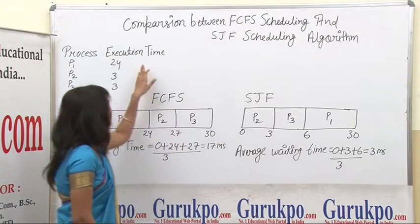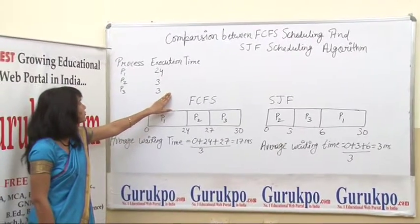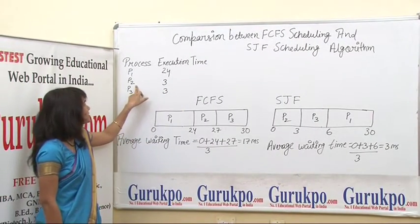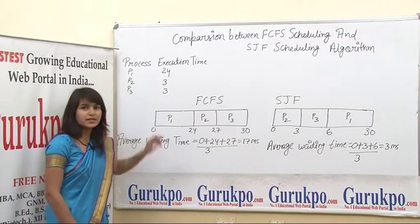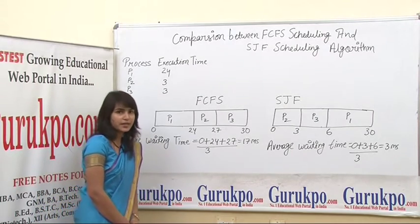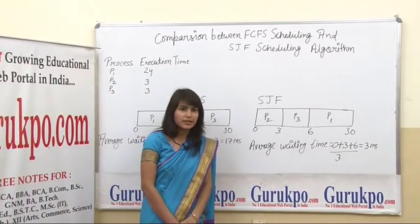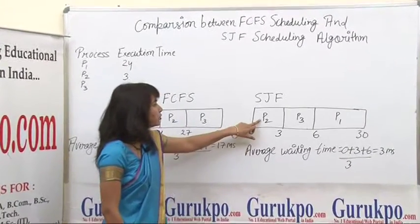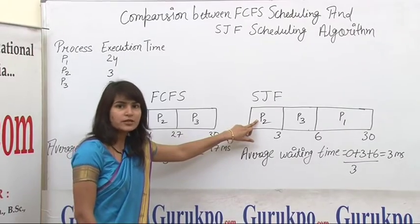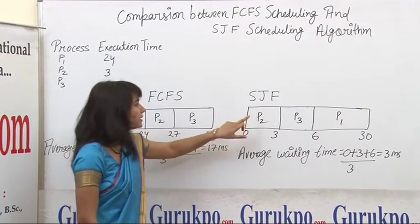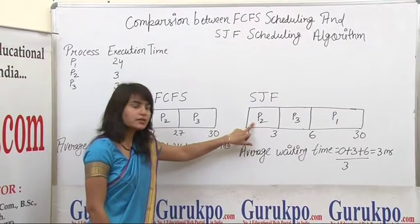Consider again the same set of processes: P1, P2, and P3. We can see that P2 and P3 have the same execution time of 3 milliseconds, and P1 requires 24 milliseconds. Since P2 arrives in the ready queue first, we apply the FCFS policy to break the tie and select P2 for providing the CPU.